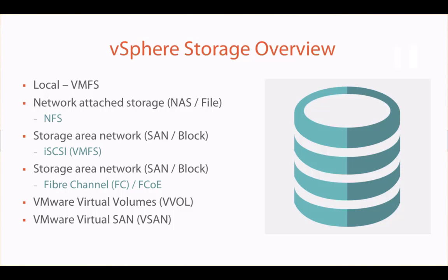In SAN we have two versions: one is called iSCSI SAN and the second is called Fibre Channel SAN. Other than that, we have VMware Virtual Volumes as a storage option, and finally we have vSAN storage for storing our machines on the network.